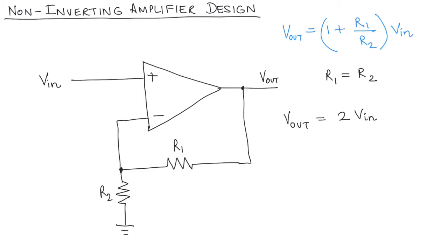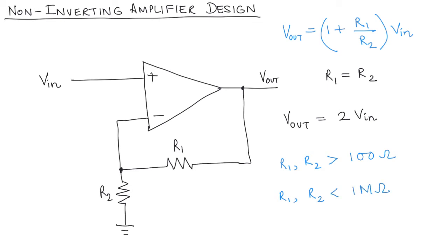As a rule of thumb, I suggest that both R1 and R2 should be greater than 100 ohms and less than 1 mega ohm. So you want your values of R1 and R2 to be between 100 ohms and 1 mega ohm.